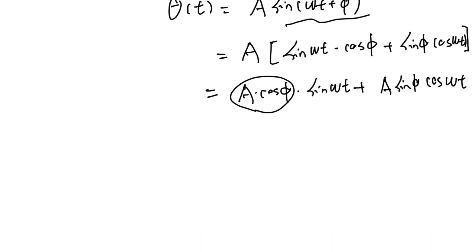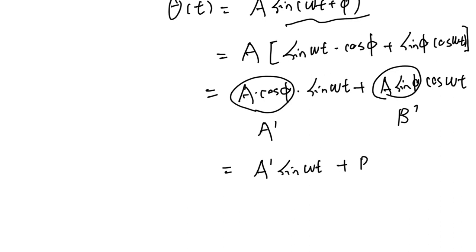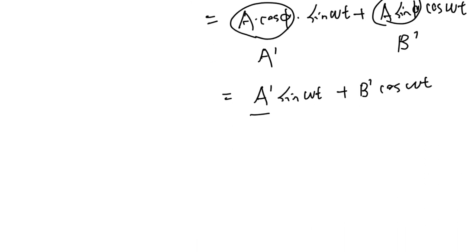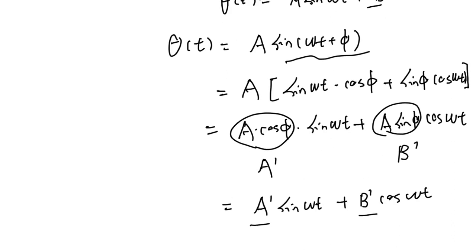We define A' = A·cosine(phi) and B' = A·sine(phi). So theta can be written as A'·sin(omega t) plus B'·cos(omega t). Since phi is a constant, cosine(phi) and sine(phi) are both constants, so A' and B' are constants as required.